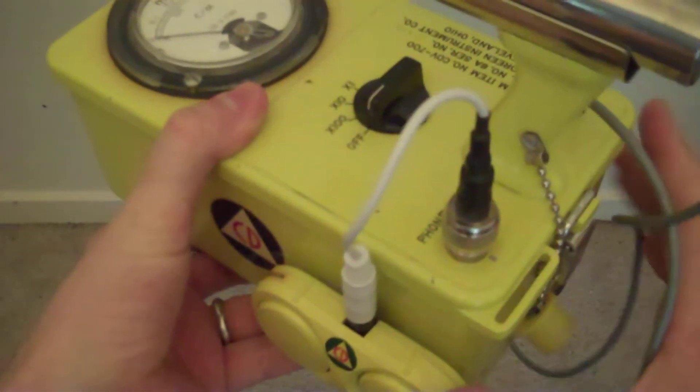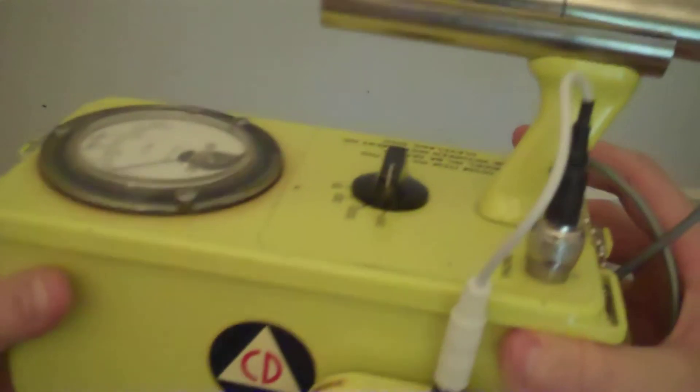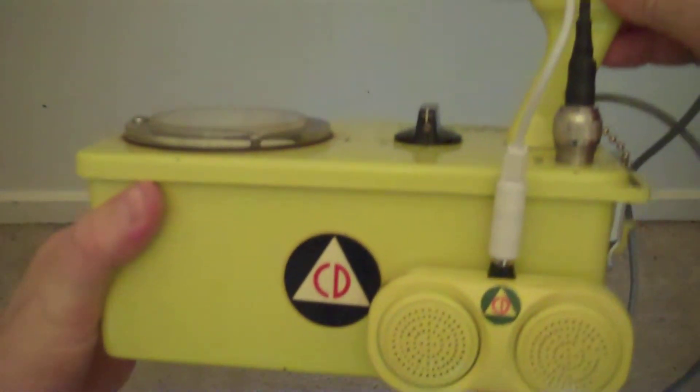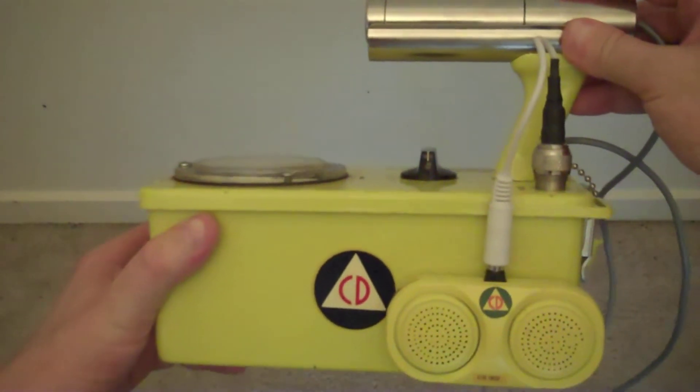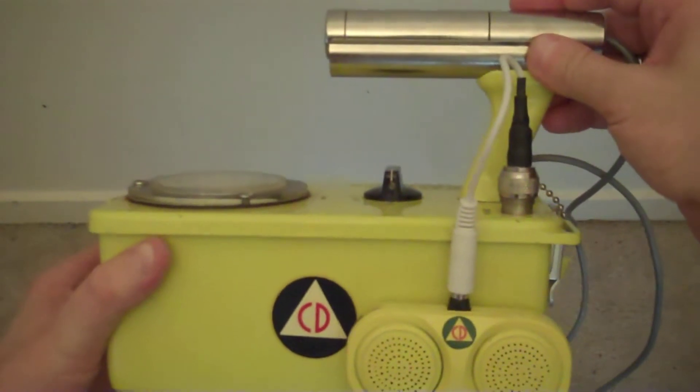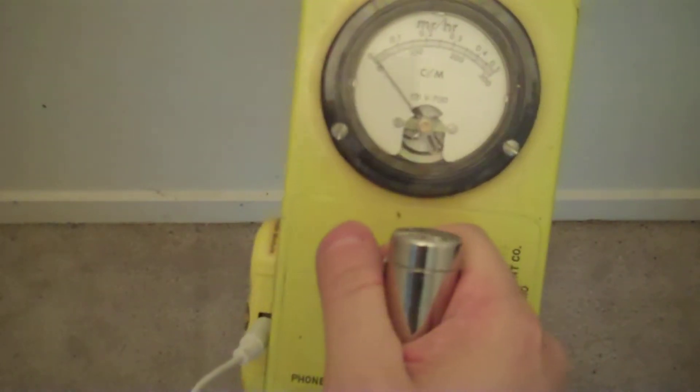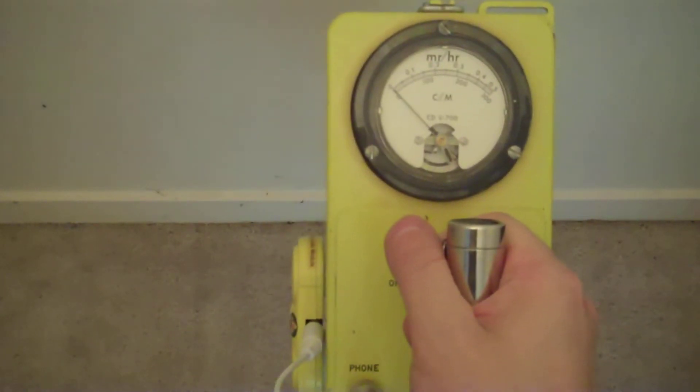The CDV-700. This is a Victorine CDV-700 model 6A. This unit was created for thermonuclear warfare.